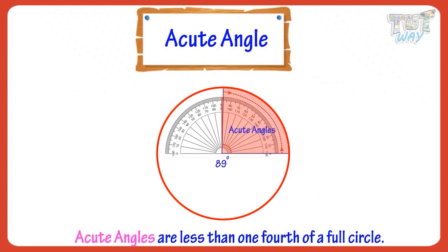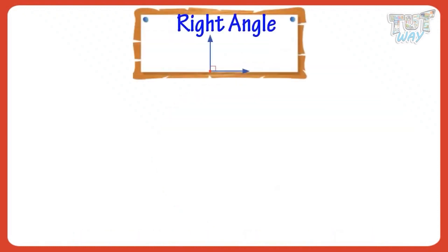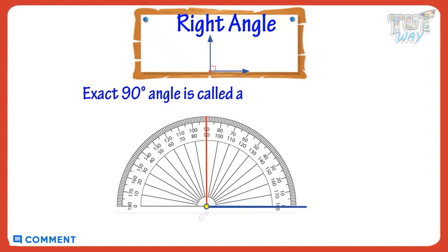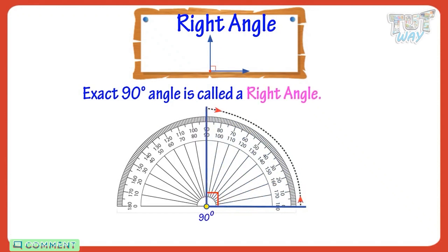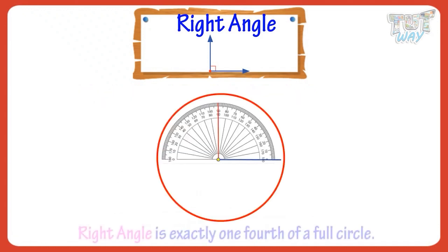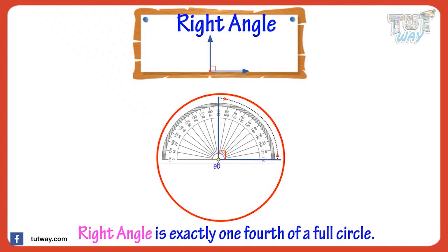Now let's learn about right angle. An exact 90 degree angle is called a right angle. We represent a right angle like this. A right angle is exactly one-fourth of a full circle.